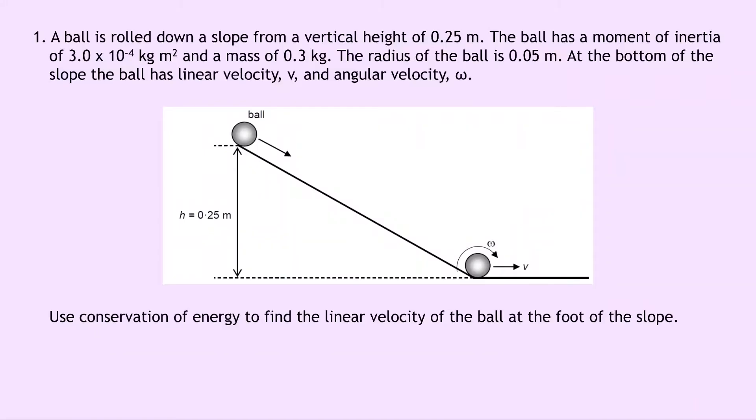So let's get started. In our one and only question it says that a ball is rolled down a slope from a vertical height of 0.25 meters. The ball has a moment of inertia of 3.0 times 10 to the minus 4 kilogram meters squared and a mass of 0.3 kilograms. The radius of the ball is 0.05 meters.